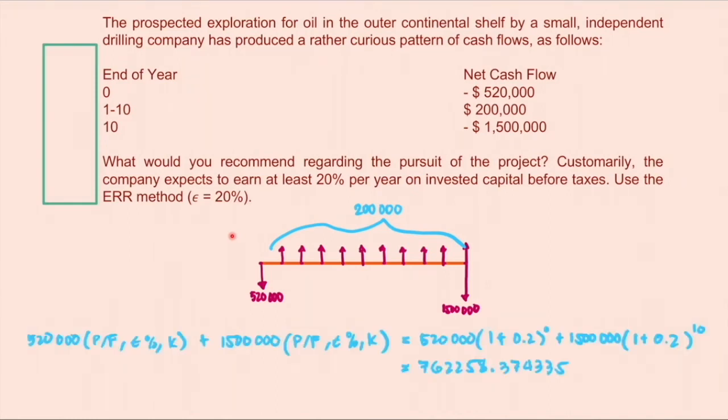So this is the solution for that. The summation of present worth of the costs which are $520,000 and $1,500,000 is this. We will be expressing these two costs as present worths. So $520,000 times 1 plus 0.20 raised to 0 since it is already on the present year 0 on the cash flow diagram.